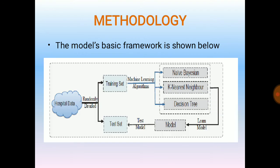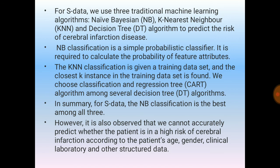Let's start with the model's basic framework. Hospital data from a cloud source is randomly divided into a training set and a test set. The training set is put through three machine learning algorithms: the Naive Bayesian classification method, the K-Nearest Neighbor, and the Decision Tree. After combining the information from all these training sets, we go to the learning model and then the test model.